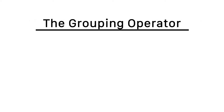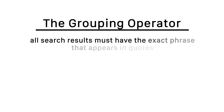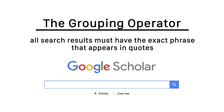The first operator we'll talk about is one you've probably used before — it's the grouping operator. If your search keywords are actually a phrase, then you can put the entire thing in quotation marks. This lets the search engine know that you are looking for the words together, and it will ignore results that contain the two words separately.